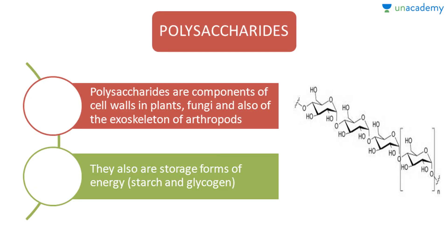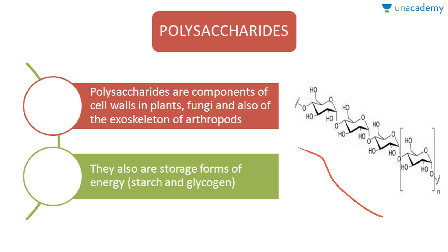Polysaccharides are components of cell walls in plants and fungi, and also of the exoskeletons of arthropods — as you have learned in the animal kingdom, arthropod exoskeletons are also made of polysaccharides. They are a storage form of energy, such as starch and glycogen, and this is a typical unit of polysaccharide.